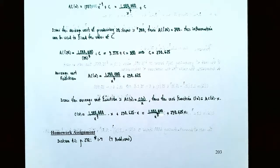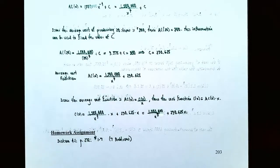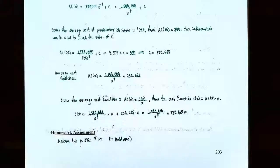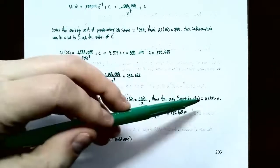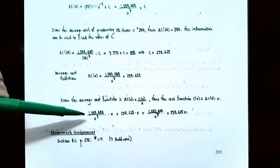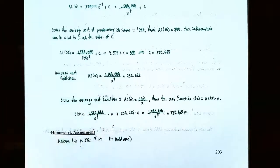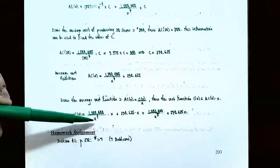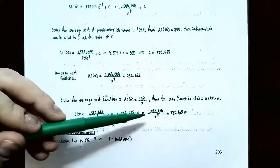We're also asked to find the cost function C(x). Since the average cost function is defined as AC(x) = C(x) / x, we can find C(x) by multiplying both sides by x. So C(x) = AC(x) · x. Taking the average cost function and multiplying everything by x: C(x) = (1,500,000 / x⁴) · x + 290.625x = 1,500,000 / x³ + 290.625x. That is the cost function for this problem.